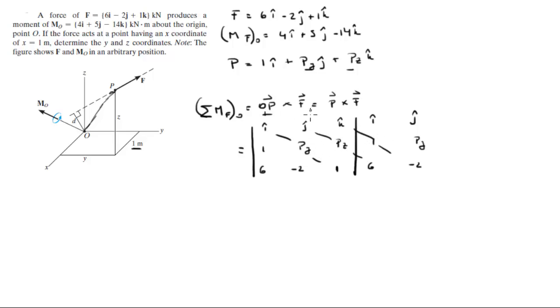You do your positive diagonals. Positive diagonals come out to be i times Py times 1 is Py i, plus j times Pz times 6 is 6Pz in the j, plus k times 1 times negative 2 is minus 2k.